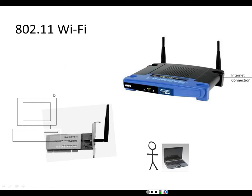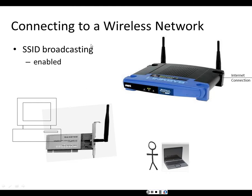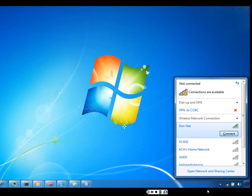In Wi-Fi, a workstation with a wireless network interface card can connect to a wireless access point, or the wireless network interface card might be built into the motherboard of the laptop. To connect to a wireless network in which SSID broadcasting is enabled on the wireless access point, we go to the bottom of the screen in Windows 7 and select the network connection icon. We click on that icon and it gives us a list of all the other wireless networks which are available, because the wireless access point is currently broadcasting.